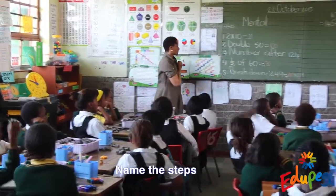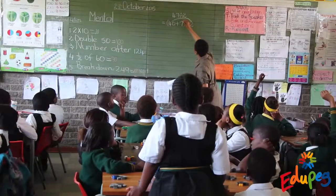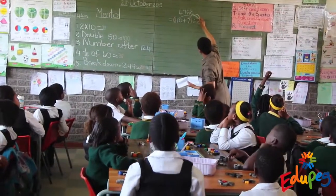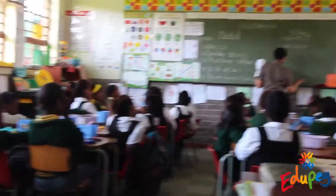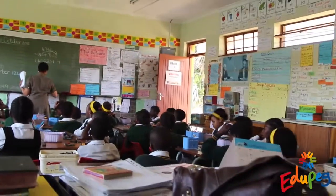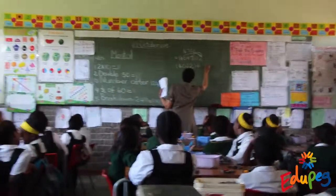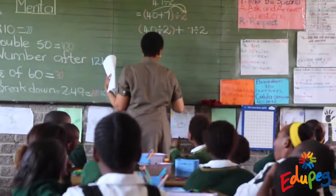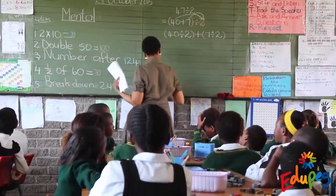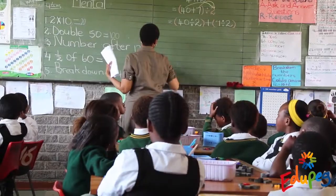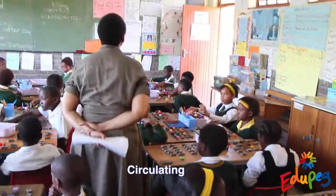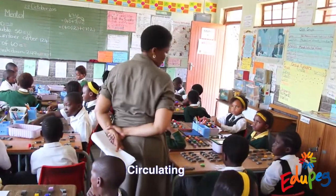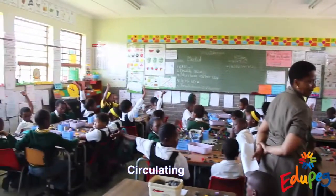Forty divided by two. Very good. So two units. Seven divided by two. Seven divided by two and brackets. Forty divided by two. 40 divided by 2 is equals to 20.